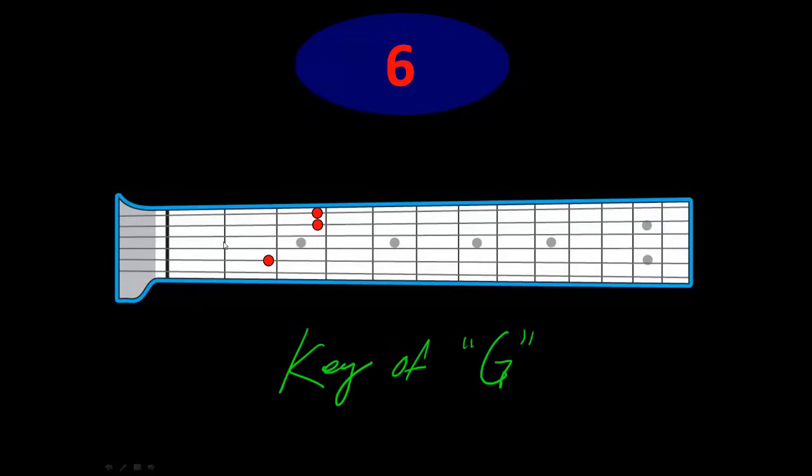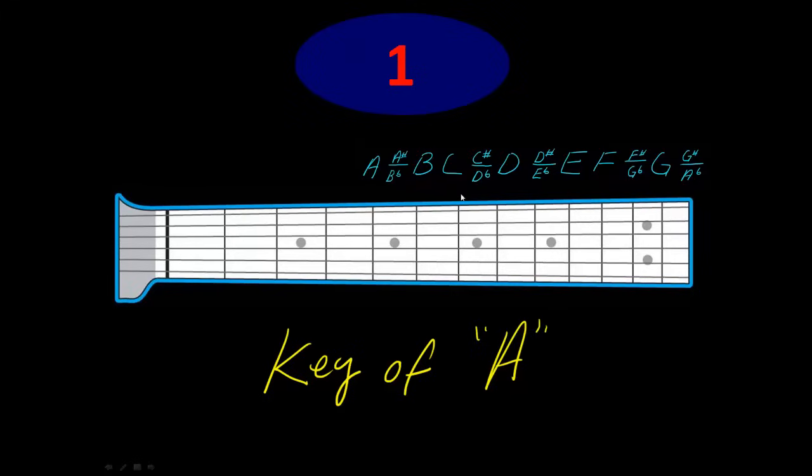So if I wanted to play now in the key of A, so I want to change the key of all the chords that I play, what I would do is this. So here's the musical alphabet. So remember earlier we were in the key of G.